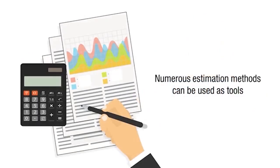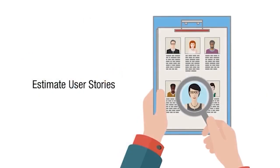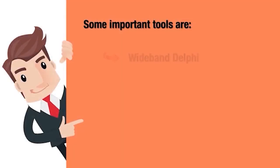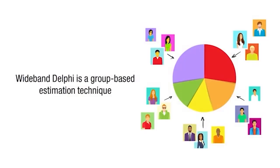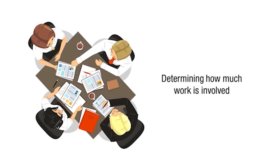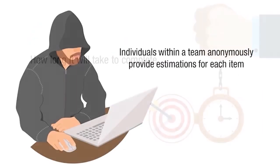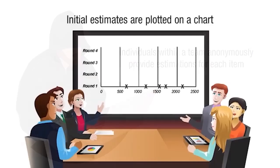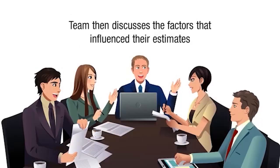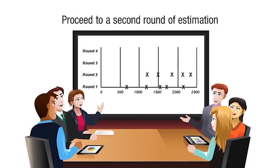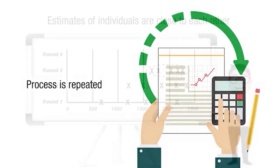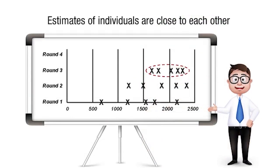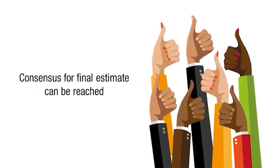The first estimation technique is Wideband Delphi — a group-based estimation technique for determining how much work is involved and how long it will take to complete. Individuals within a team anonymously provide estimations for each item, and the initial estimates are plotted on a chart. The team then discusses the factors influencing their estimates and proceeds to a second round, repeating until consensus is reached.